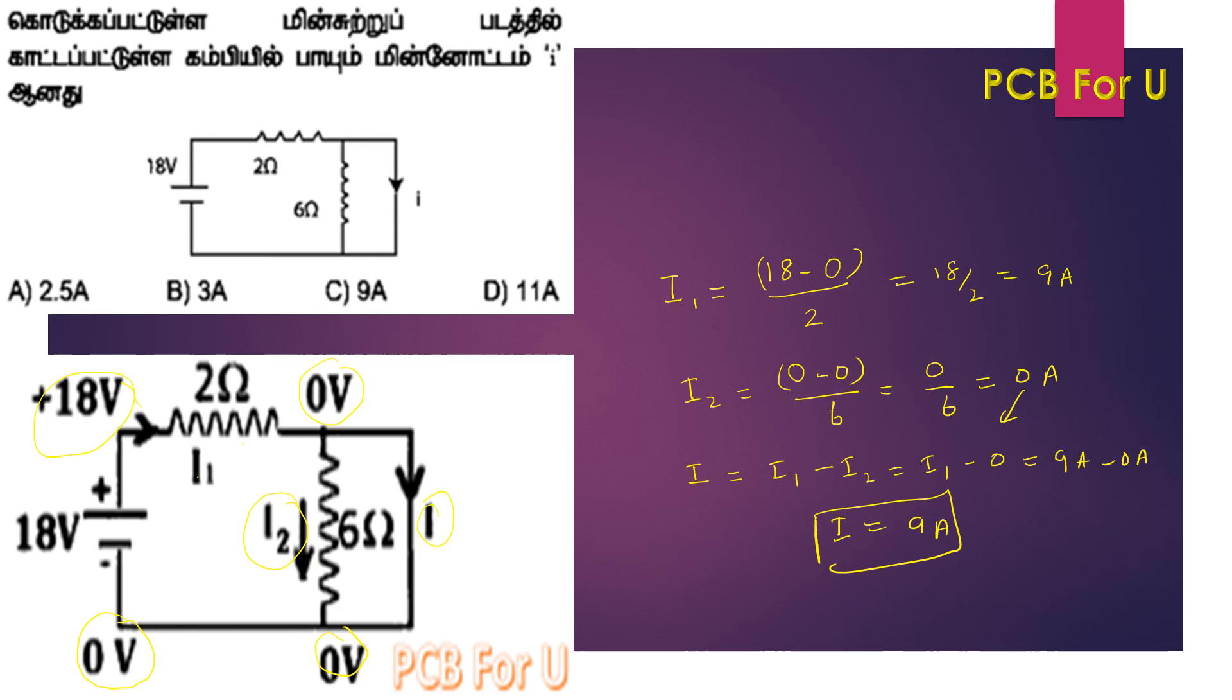I1 and I2 are related. I1 is equal to minus I2. Since I2 equals zero, I equals 9 amperes.